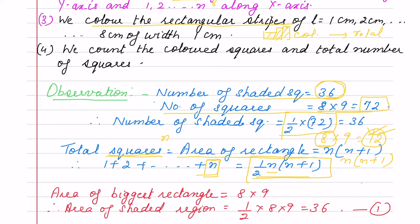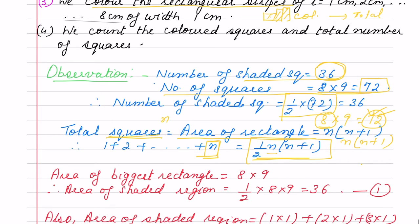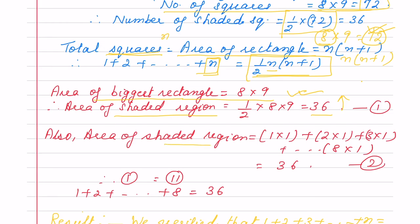Putting the values algebraically: the area of the biggest rectangle is 8×9 = 72, and the shaded region is 36, which is just half. If you count the area of the shaded region — one square unit for the first stripe, two for the second, three for the third — and add them all, the total is 36. We get 36 from both the geometric count and the equation. This way we verify that the sum of n natural numbers is n(n+1)/2.